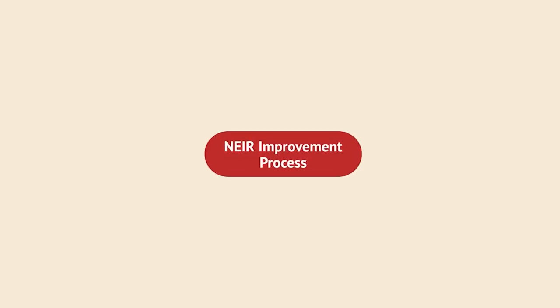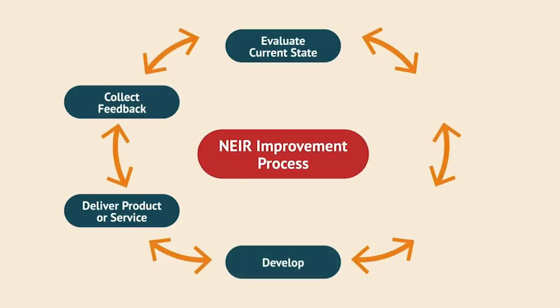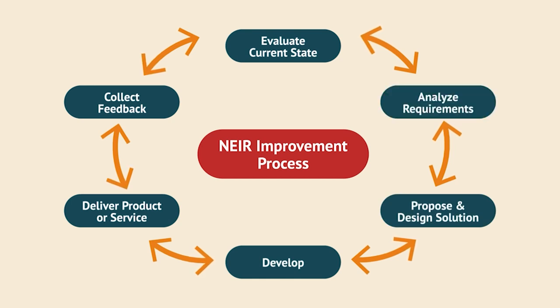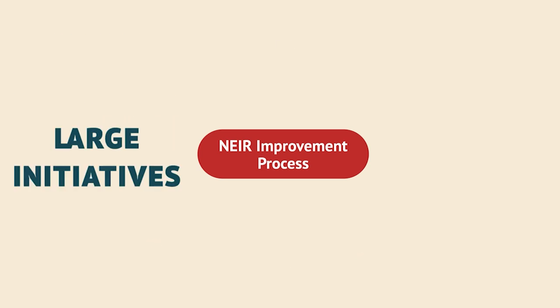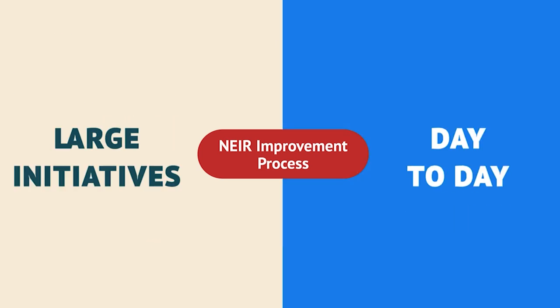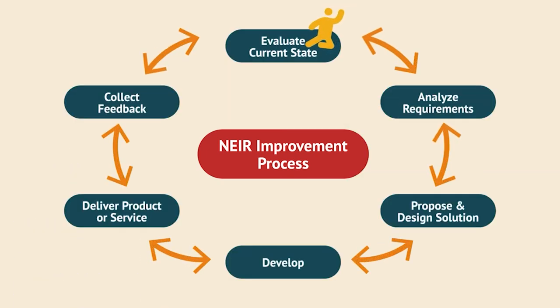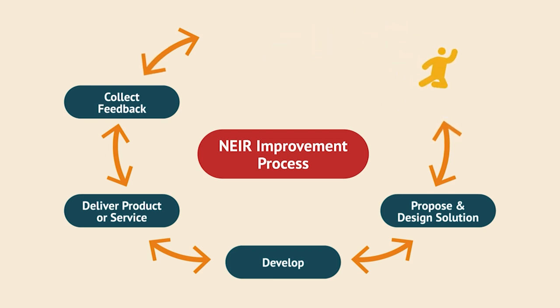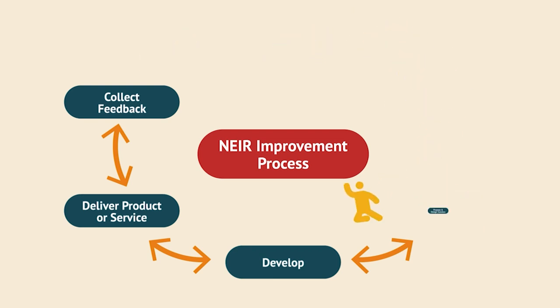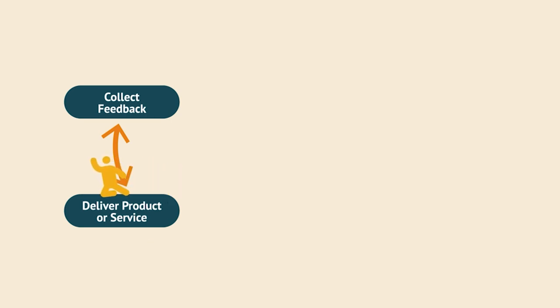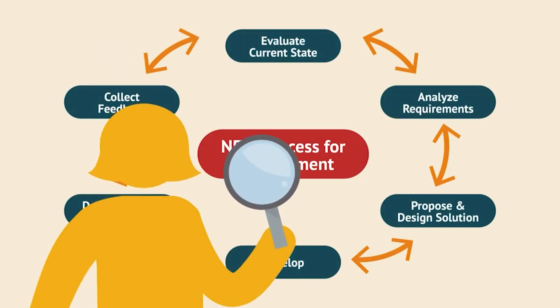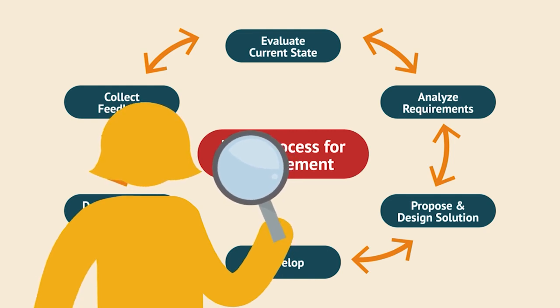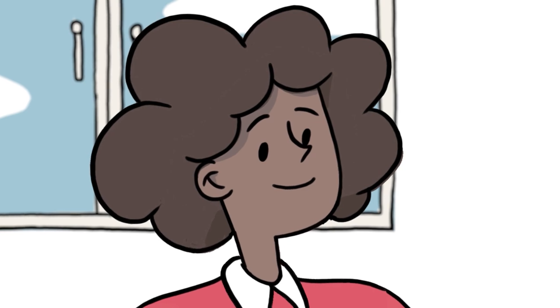The NEAR process for improvement also provides a more operational approach that makes it easier to adapt to your specific situation. It's applicable to large strategic initiatives or to day-to-day improvements in an individual classroom. The cycle steps include: assess current state, analyze requirements, propose and design possible solutions, develop possible solutions, deliver the product or service, and collect feedback. You're always collecting data, but now you bring it all together to support the next step: evaluating the new current state.